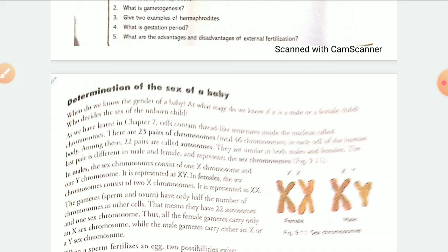X and Y are the chromosomes of male and female. When gametes are formed, the pairs separate. The egg cell carries an X chromosome and the sperm cell carries either an X or Y chromosome. When fertilization takes place, if both gametes carry an X chromosome and fuse, it will give XX, or a girl child. When an egg with an X chromosome fuses with a sperm carrying a Y chromosome, the zygote will be XY, or a male child.